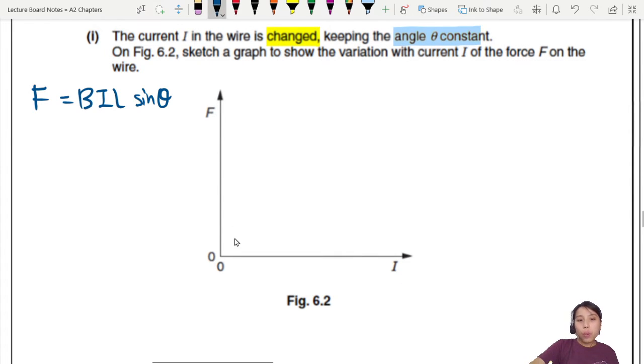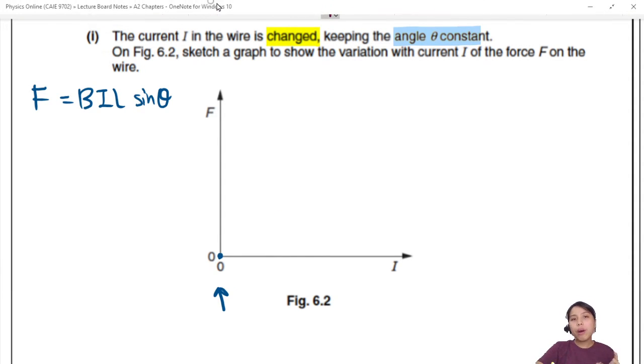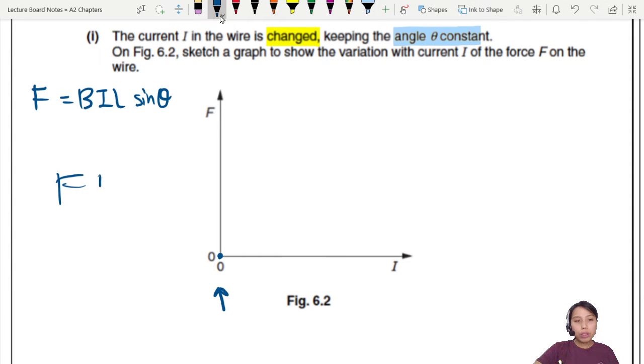Or you could think of it this way. When there's no current flowing through the wire, will there be a force? No. No current, no force, so it should pass through this point. When there's large current, there is a force. So it's probably gonna be like that, either a straight line or a curved line. How do we know? That's when we look at the equation.